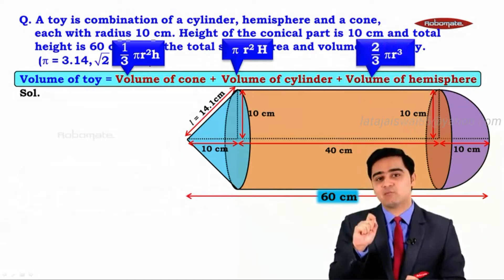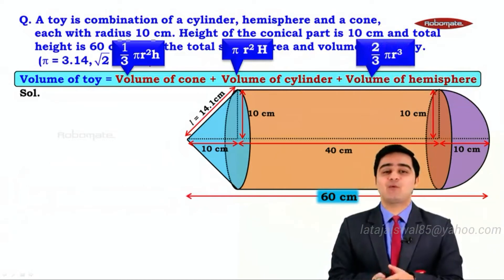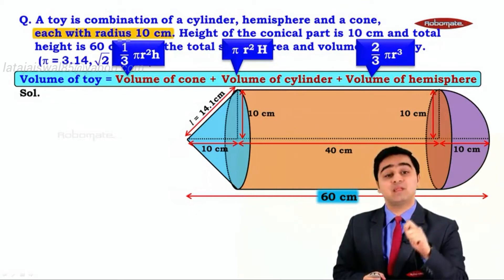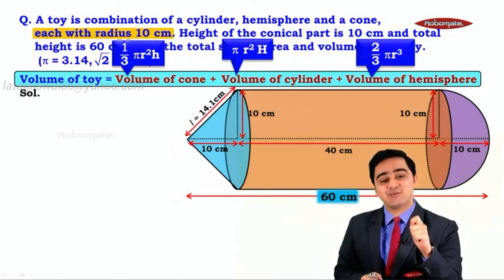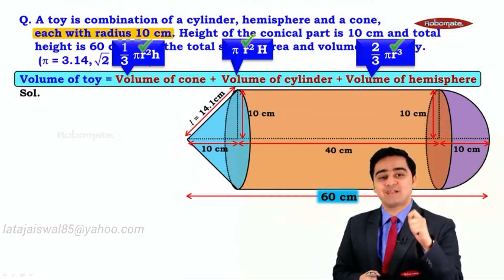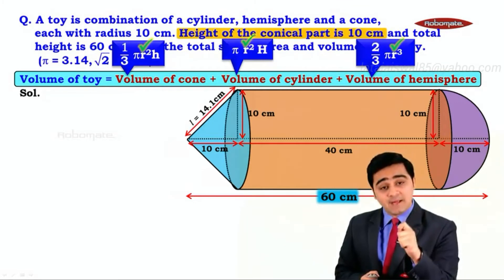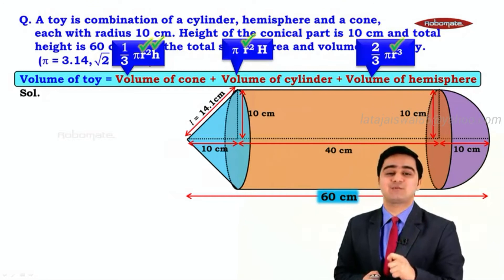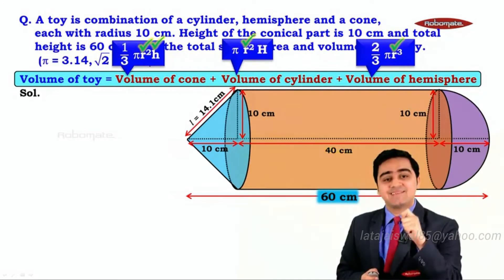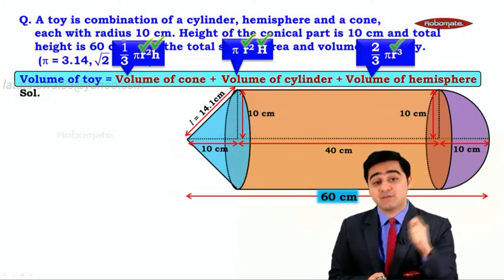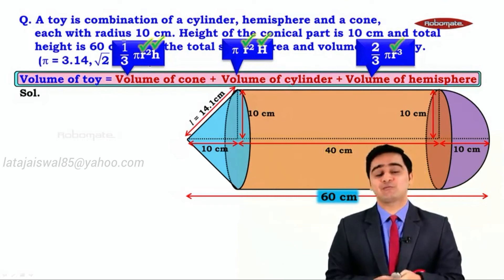Now let us see the given information to check whether we can find the volume of the toy. The radius of the cone, the cylinder, and the hemisphere is the same — it is 10 centimeters. So we have small r. The height of the conical part is 10 centimeters, so we have small h. Capital H, the height of the cylinder, is also known to us. So now we have everything needed to find the volume of the toy.